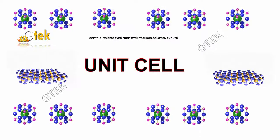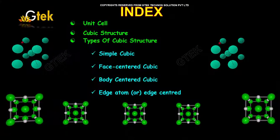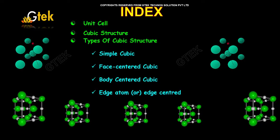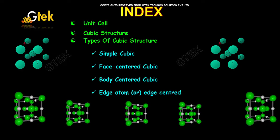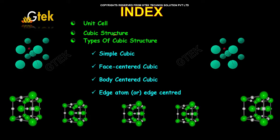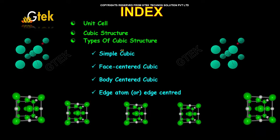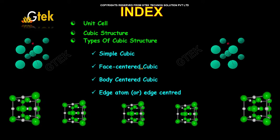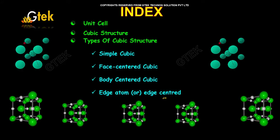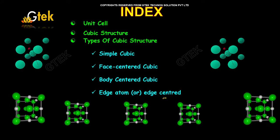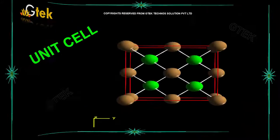This is on unit cells. Here is the index. We are going to discuss the cubic structure and the types of cubic structures: first one is simple cubic, face-centered cubic, body-centered cubic, and edge atom centered cubic.